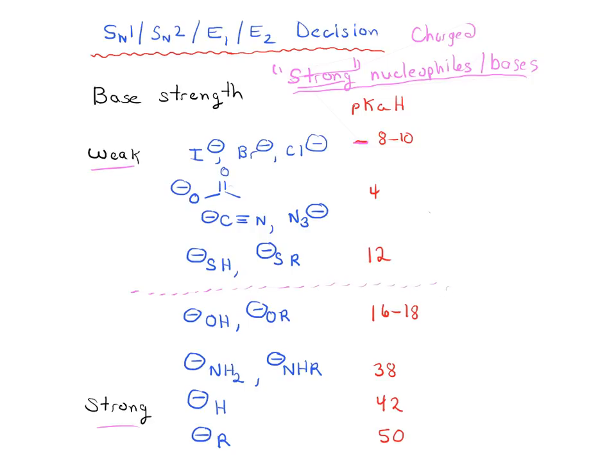Anything above this line is not usually a strong enough base to do E2. It's not a strong enough base to do the E2. So in other words, it's going to be SN2, almost certainly going to be SN2 at this point, assuming you've already asked the substrate question.